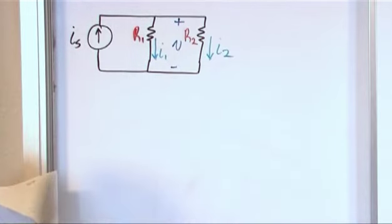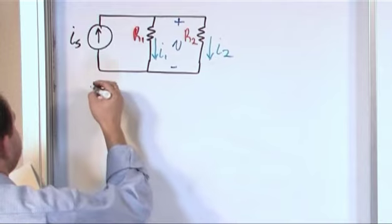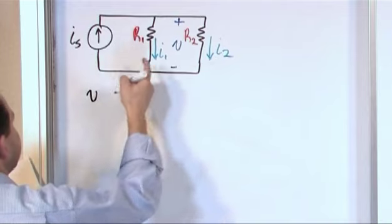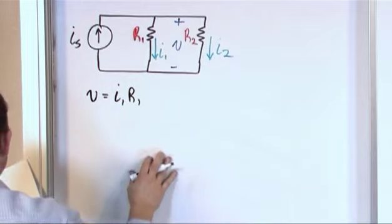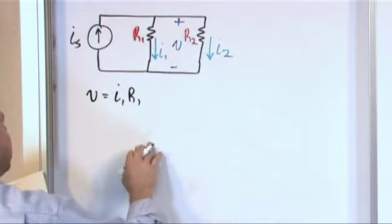So what we can do is we can recall, we know that V is equal to IR, so we can say that this voltage right here is equal to I1 times R1. Wouldn't you agree that's the case? Because you have I times R, that's the voltage here.